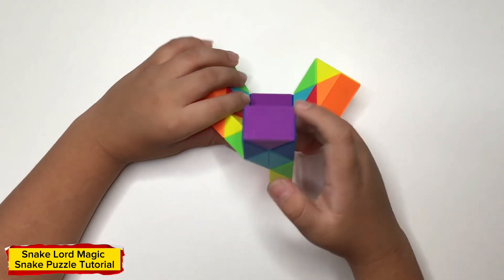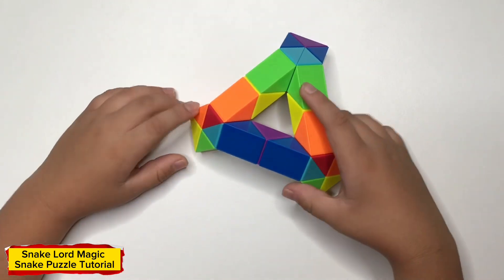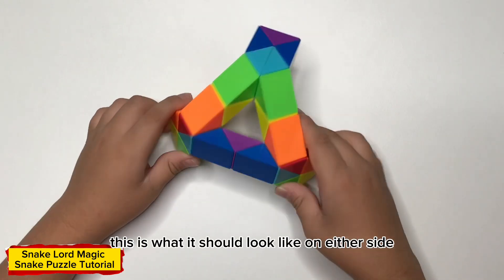Now count to one, two and turn this green on like this. This is what it looks like on either side.